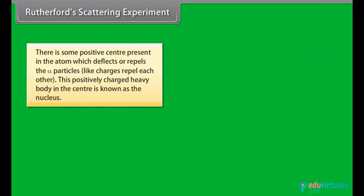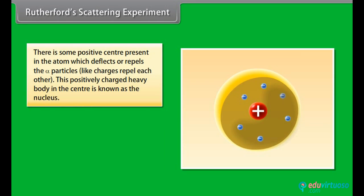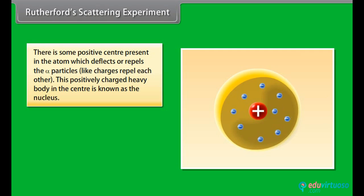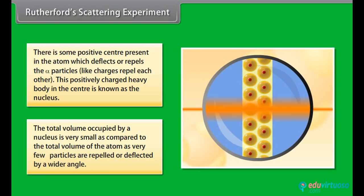There is some positive center present in the atom, which deflects or repels the particles, like charges repel each other. This positively charged heavy body in the center is known as the nucleus. The total volume occupied by a nucleus is very small as compared to the total volume of the atom, as very few particles are repelled or deflected by a wider angle.